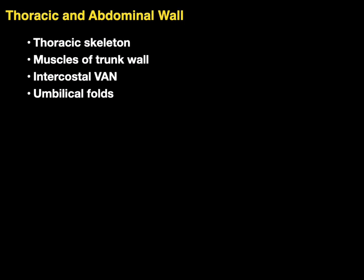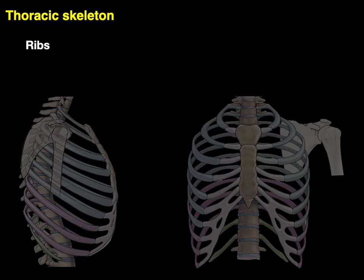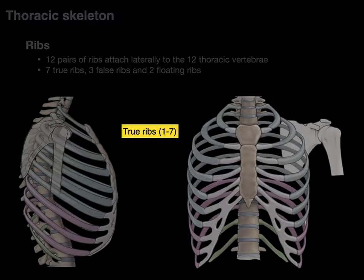We're going to start with the thoracic skeleton. The ribs are part of this thoracic skeleton and there are 12 pairs of ribs and they attach laterally to the 12 thoracic vertebrae, and they're broken down as follows: there are seven true ribs, three false, and two floating ribs.